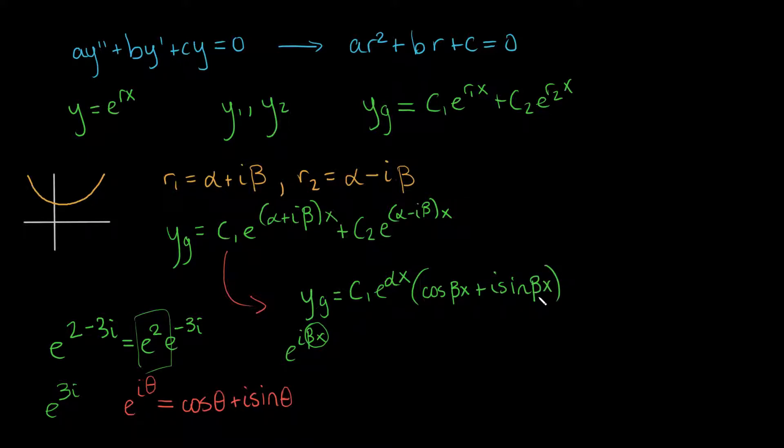And if we then account for the second term, we get c2 e to the same alpha times x times, now slightly different, we get the cosine of negative beta x. But cosine is an even function, so that won't really affect it. And then we get, now we have this minus, but the sine is an odd function, so it will affect it. We can just pull the minus out. We get minus i sine beta x.